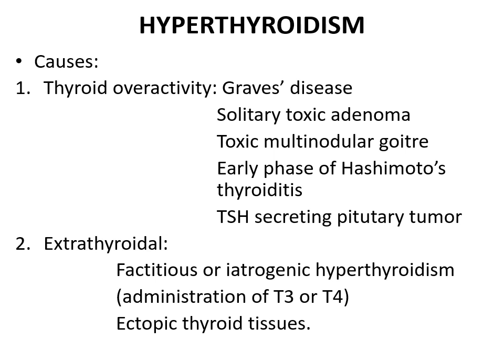Causes of hyperthyroidism: the first category is thyroid overactivity. The most common cause is Graves' disease. Others include solitary toxic adenoma, toxic multinodular goiter, early phases of Hashimoto's thyroiditis (because in the late phase there is hypothyroidism), and TSH-secreting pituitary tumor. Extrathyroidal causes include factitious or iatrogenic hyperthyroidism — that is, administration of T3 or T4 — and ectopic thyroid tissue.